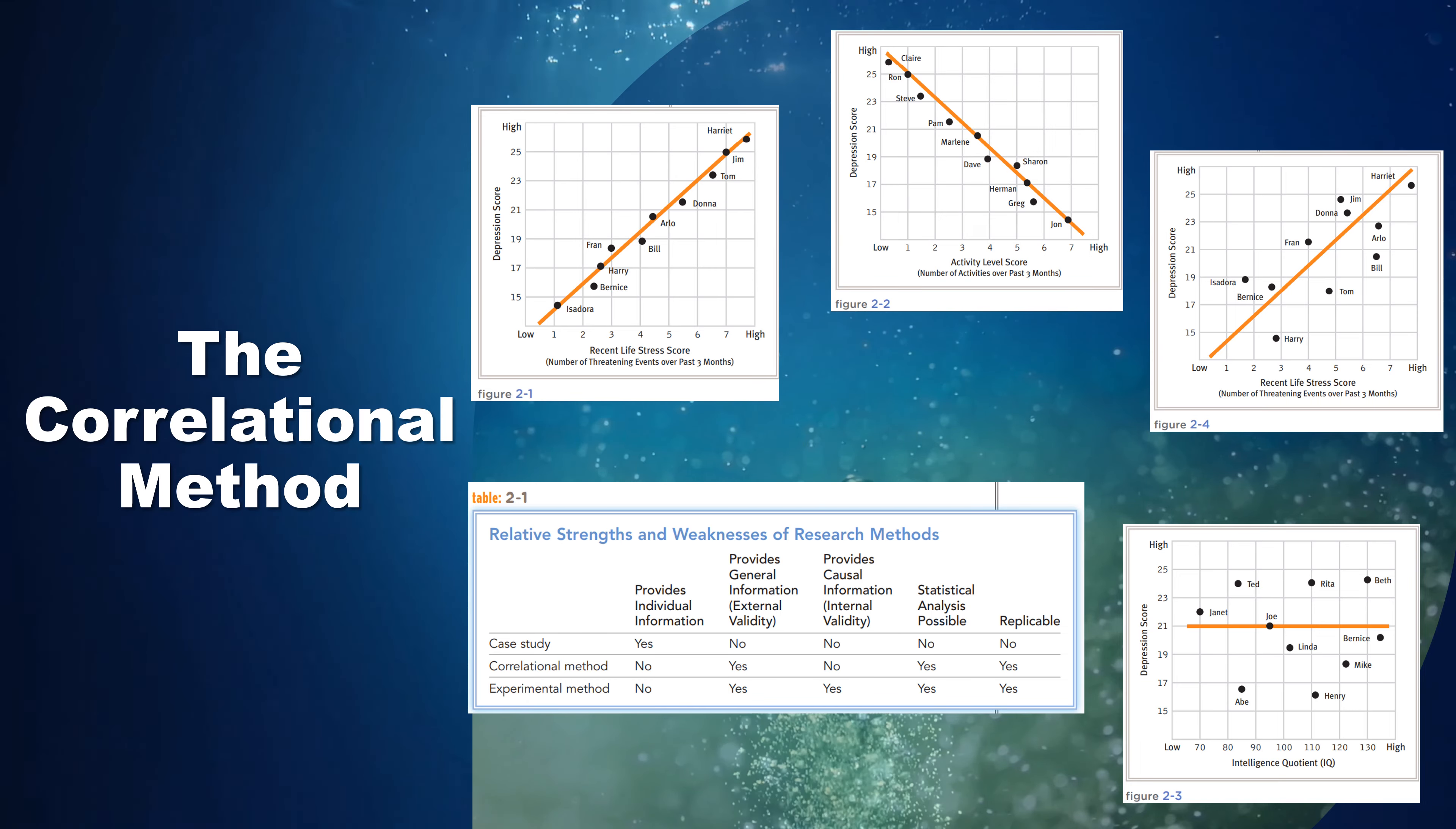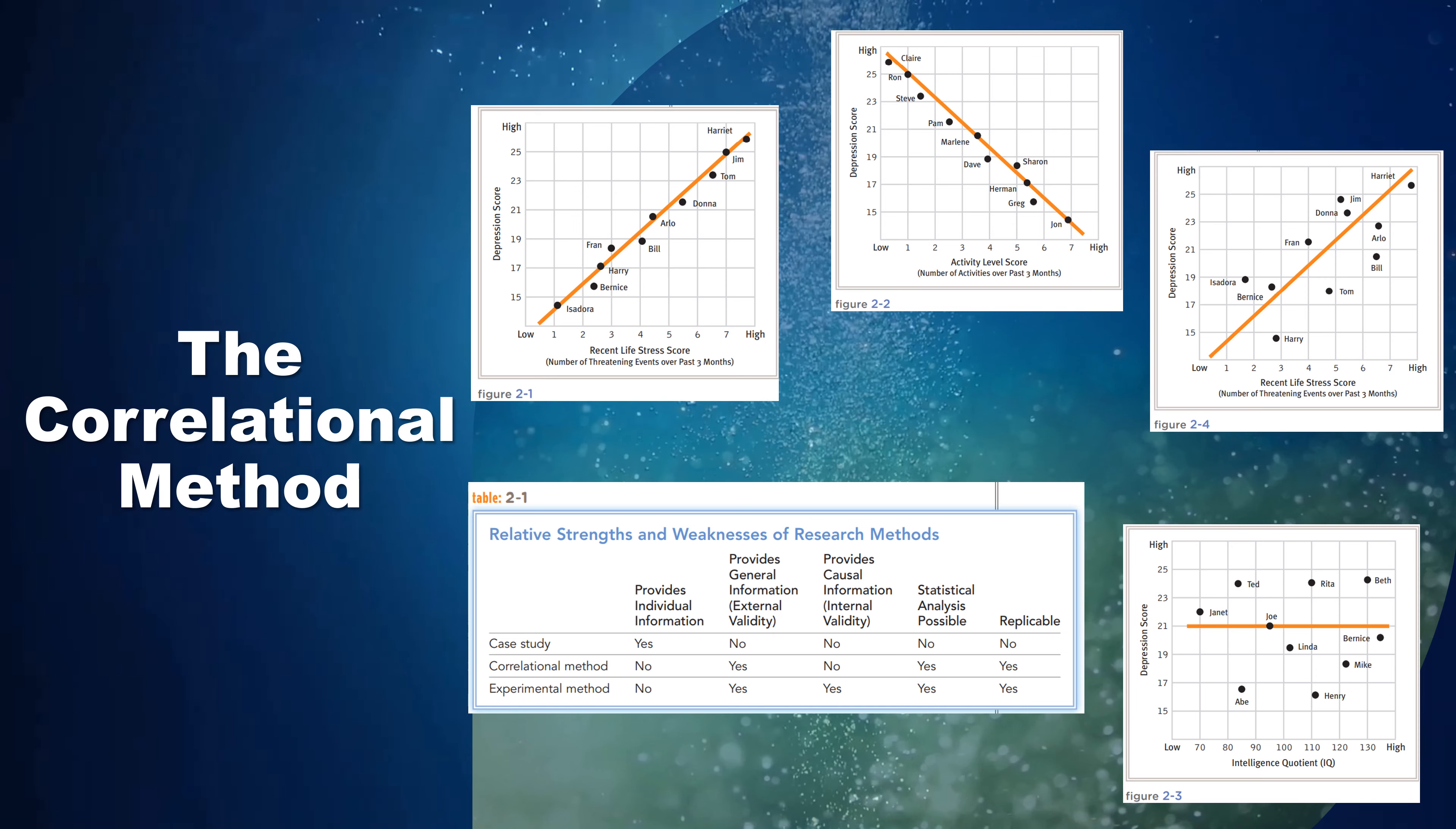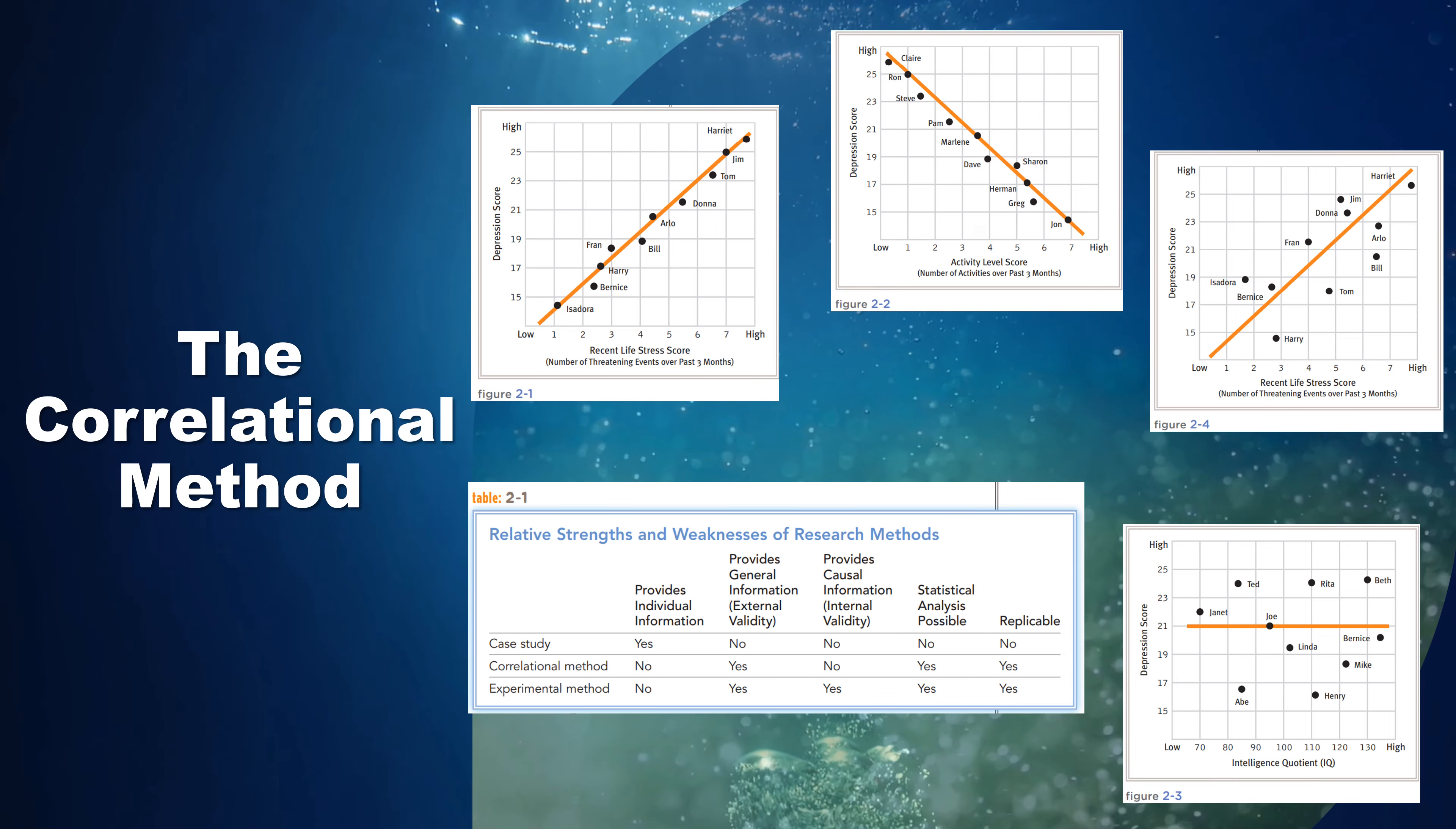Although correlations say nothing about causation, they can still be of great use to clinicians. Clinicians know, for example, that suicide attempts increase as people become more depressed. Thus, when they work with severely depressed clients, they stay on the lookout for signs of suicidal thinking.